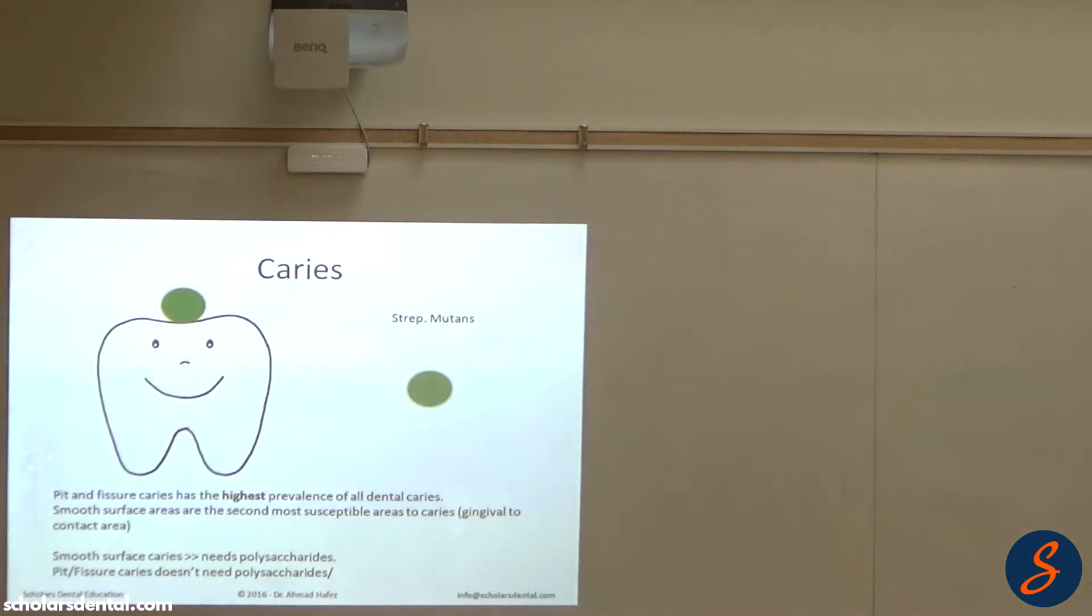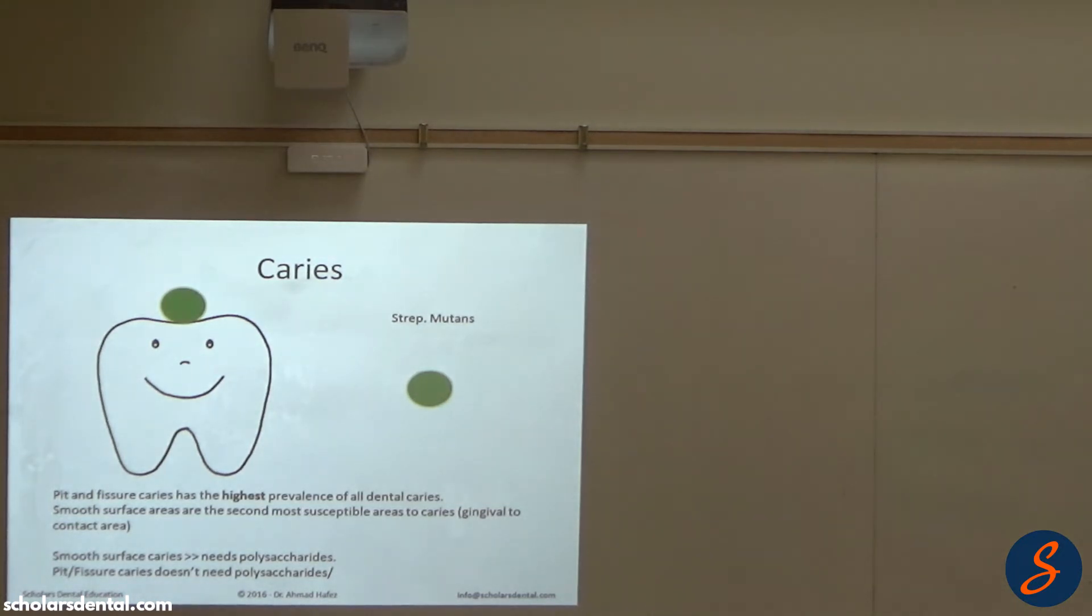Caries could be in the pit and fissure or on the smooth surface. Which one is more likely to happen? Pit and fissure. So pit and fissure caries are the highest prevalence of dental caries. They're the more common one.